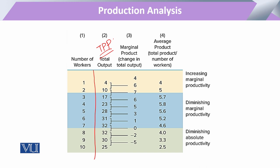Looking at the Total Physical Product table, with every utilization of one additional unit of input, the total product is increasing. Now, what is the science behind this? Skipping column 3, I am going directly to column 4. Column 4 shows the Average Product.